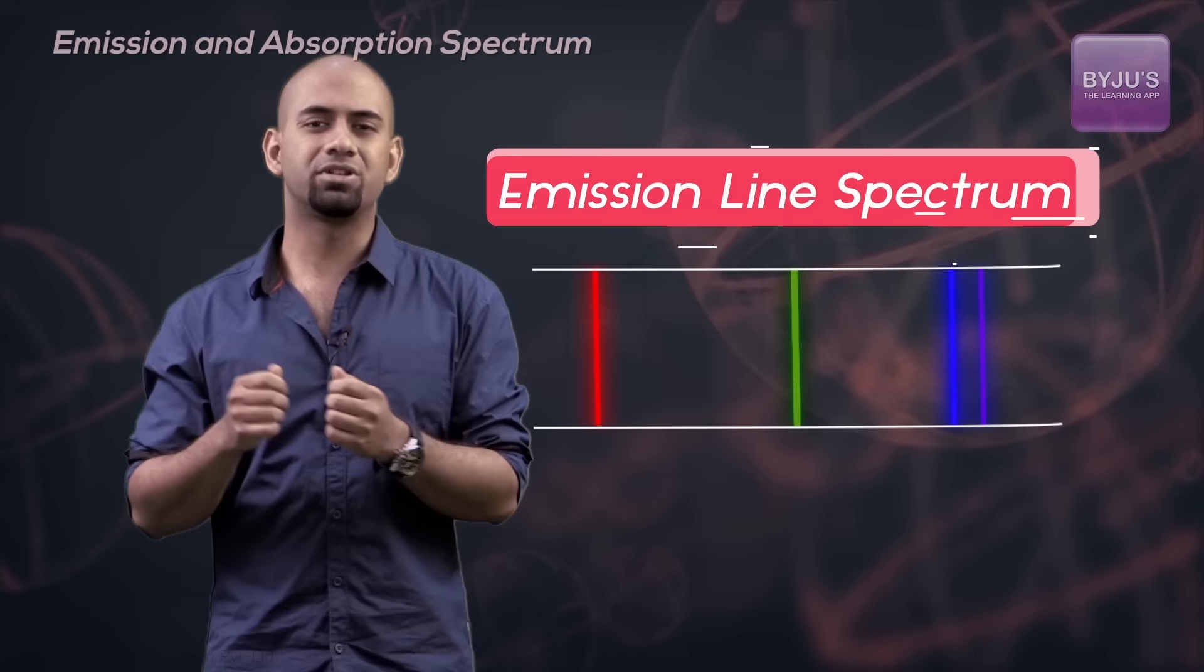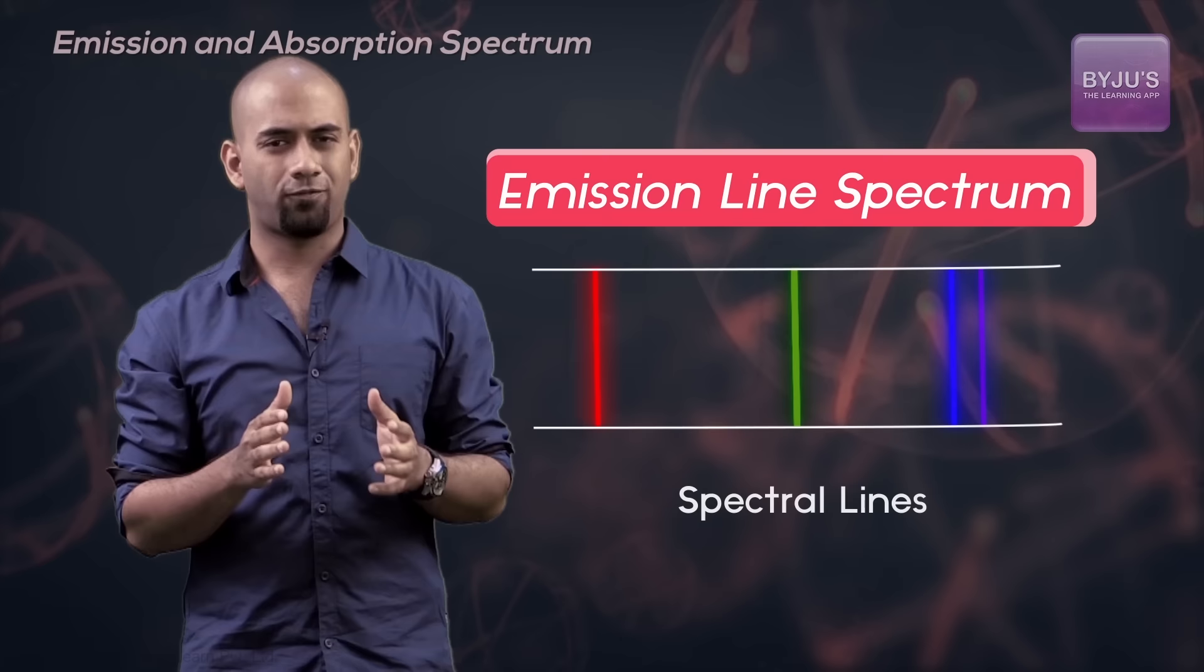And this spectrum, this is called the emission line spectrum, and these lines are called spectral lines.